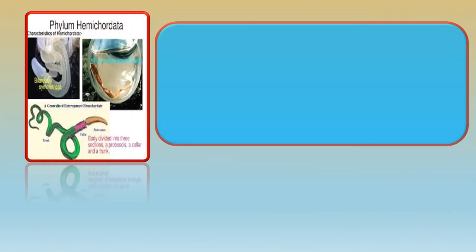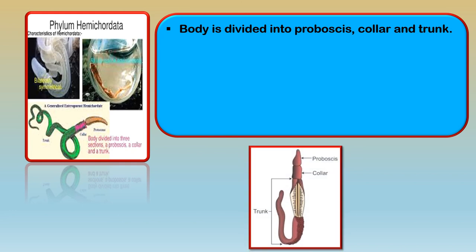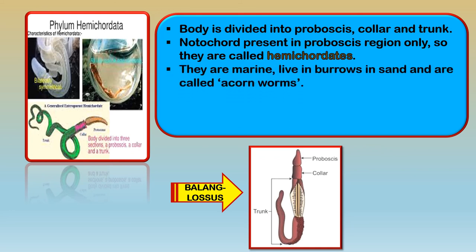The next phylum is Hemichordata. The unique characteristic is that the body is divided into proboscis, collar, and trunk, as seen in the example Balanoglossus. The top structure called the proboscis is shaped like the fruit acorn, and therefore they are called acorn worms. They are marine or live in burrows in the sand. They have one or many pharyngeal slits for breathing.